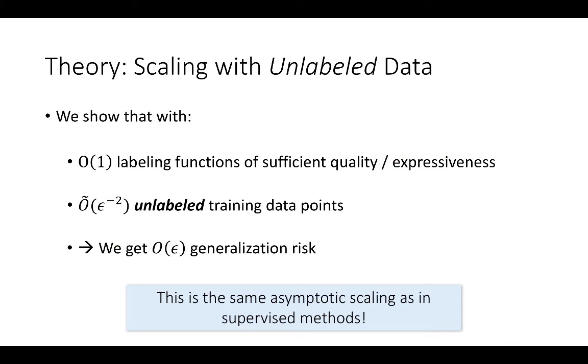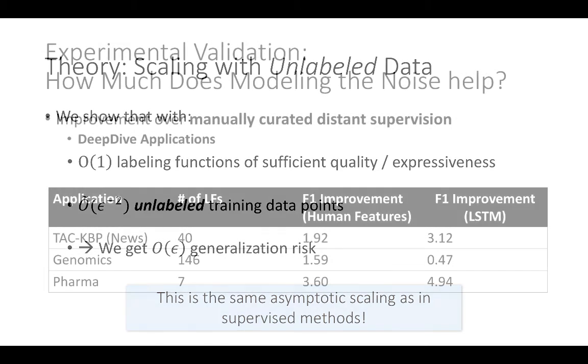On the theory side, we show an exciting result, which is that by writing a constant number of labeling functions, we can achieve the same asymptotic scaling with respect to generalization risk that supervised methods do, except in our case with respect to feeding in more unlabeled training data.